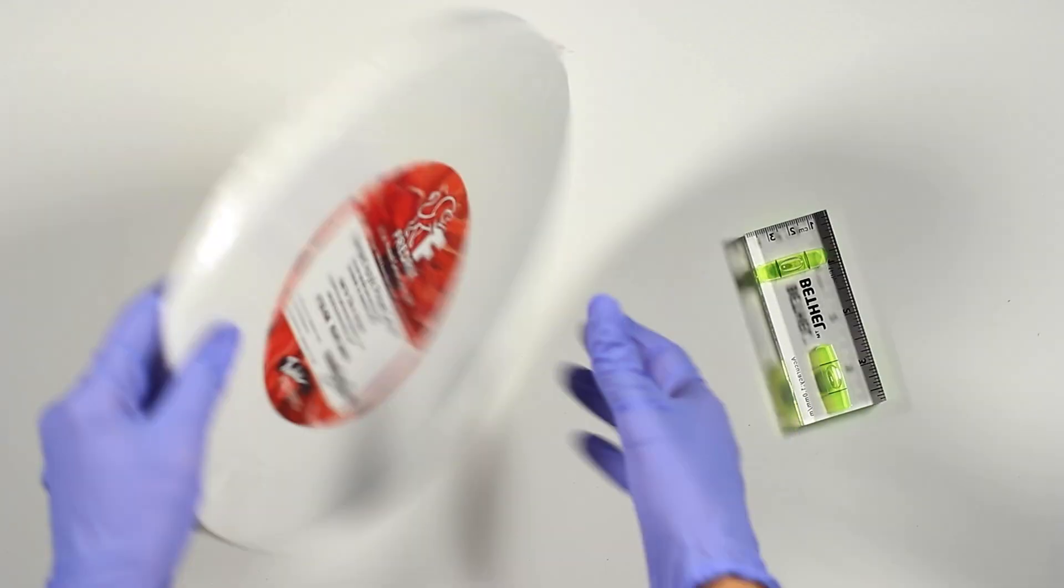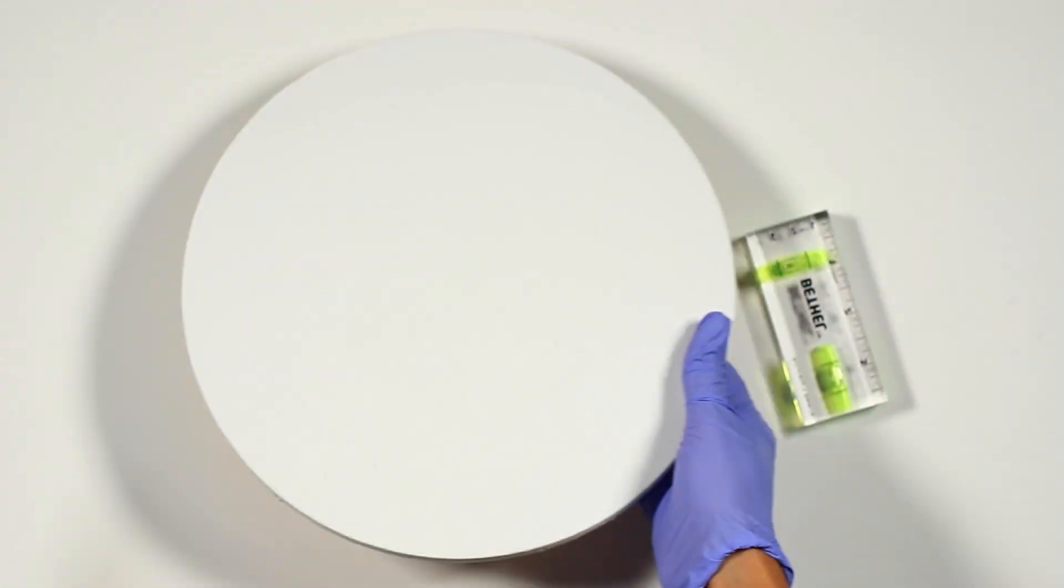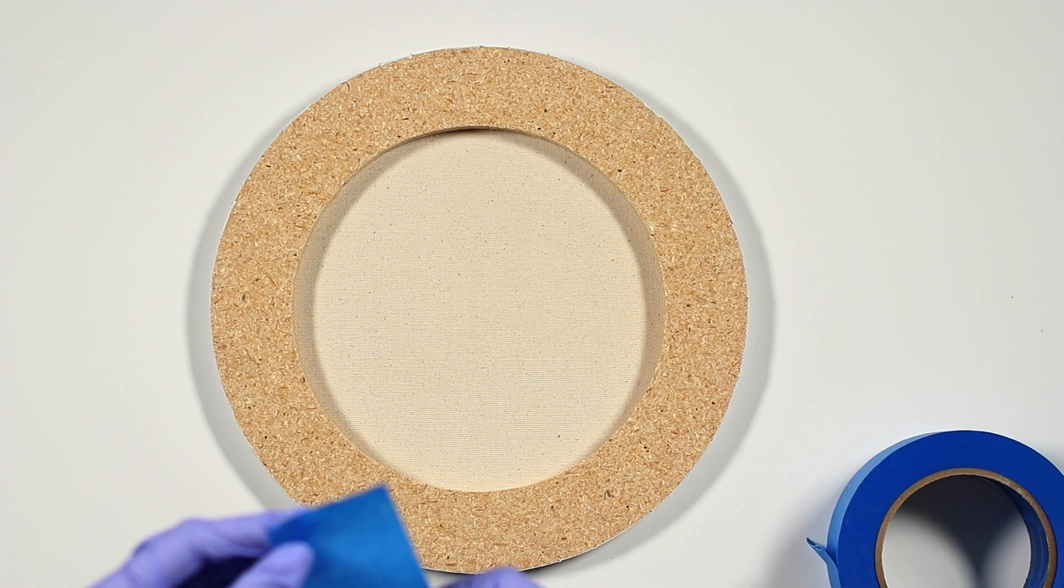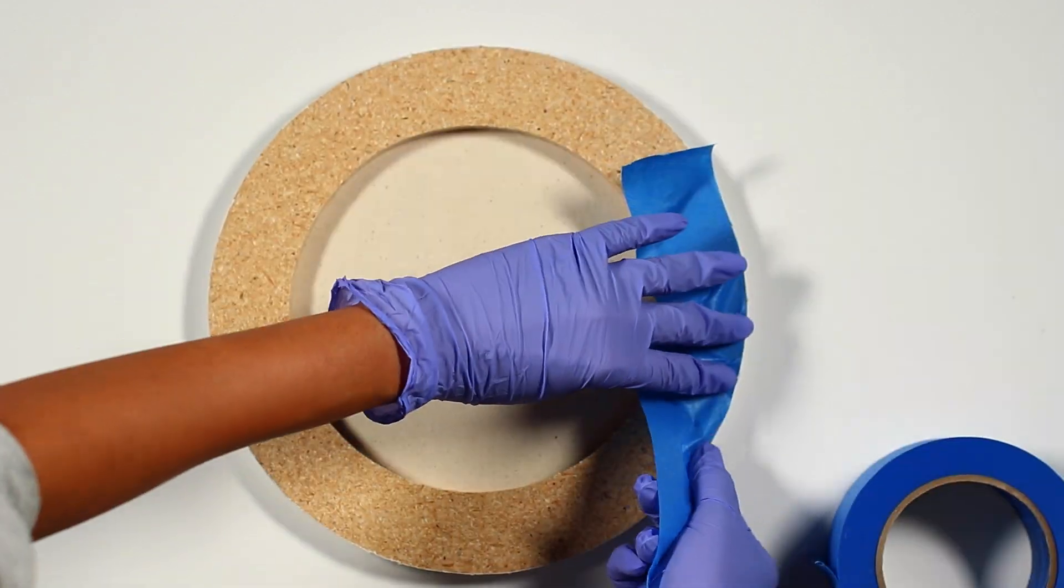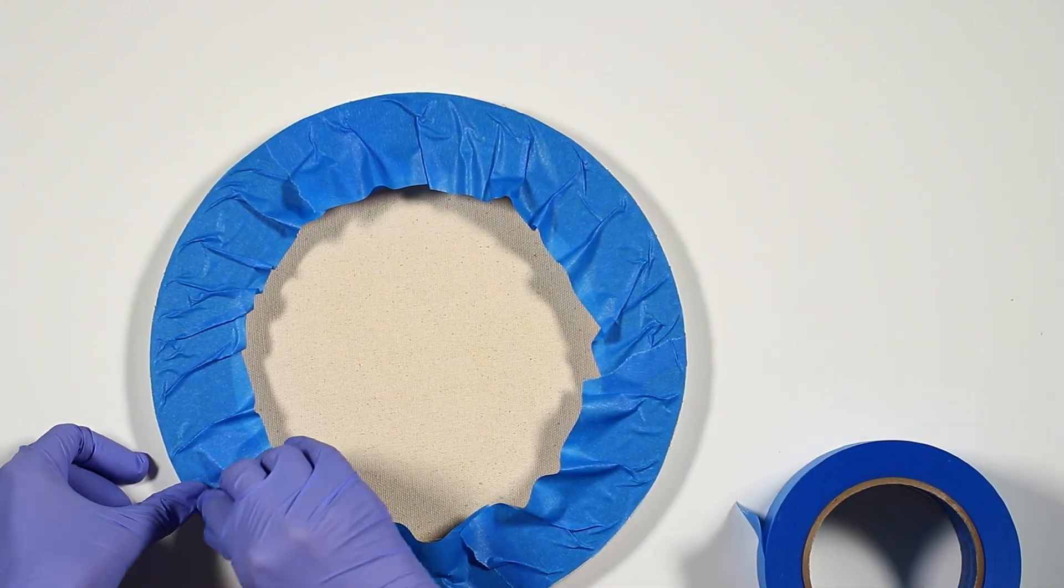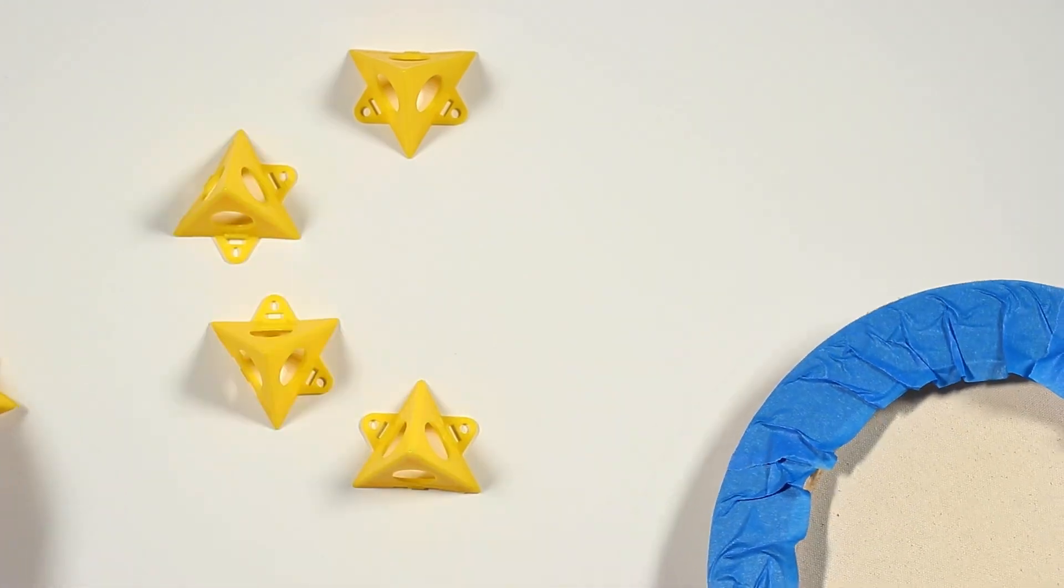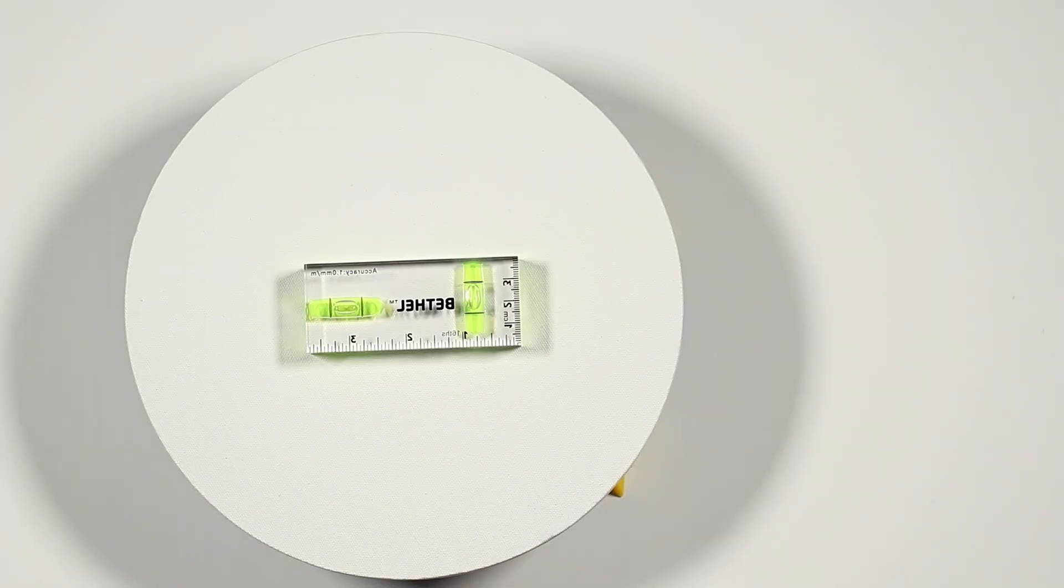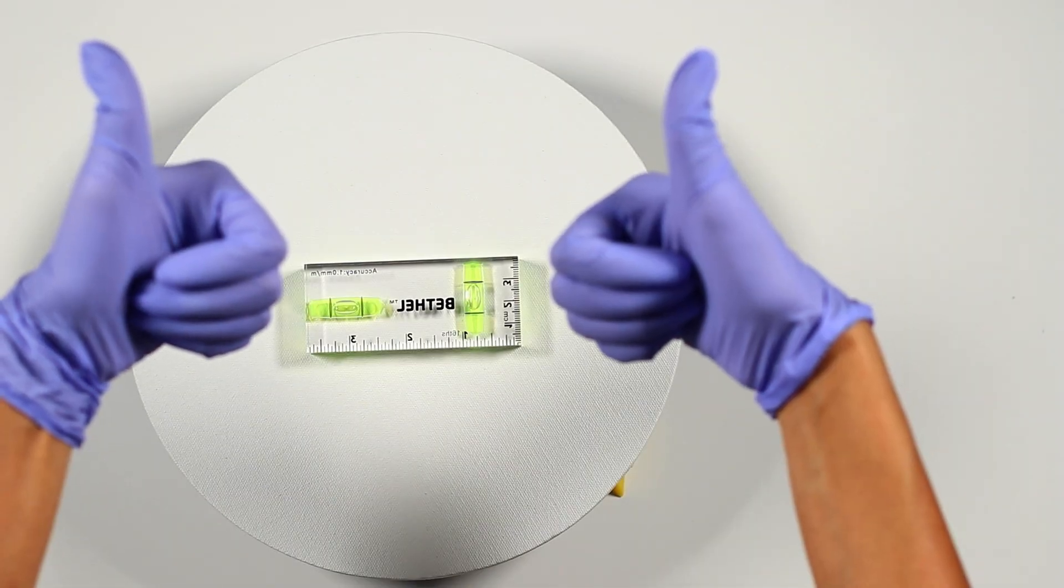Now it's time to make the faux marble resin clock face. For this I'm going to use a 10 inch canvas and I'm just going to flip it around and tape the back so when I pour the resin on and it drips to the back side I can easily take it off by removing the tape. I got some handy dandy little risers that I'm going to use to elevate my canvas and I'm going to make sure that it's level before I even do anything else.